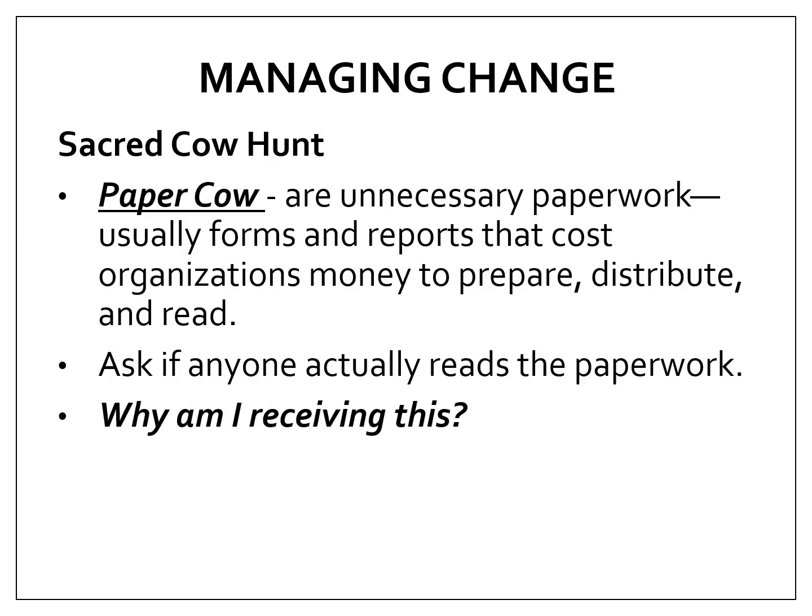There are three types of sacred cows in an organization. The first is the paper cow — unnecessary paperwork such as forms and reports that cost organizations money to prepare, distribute, and read. To know if a form is a paper cow, ask questions like: Why am I receiving this? Maybe your unit is required to write a report every week, but even without that report, the unit can do its job — that's a paper cow, an unnecessary paperwork.